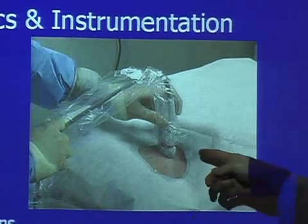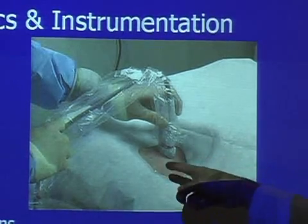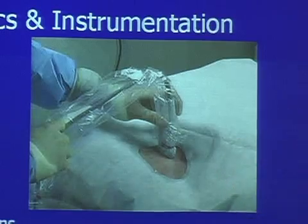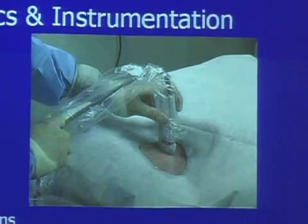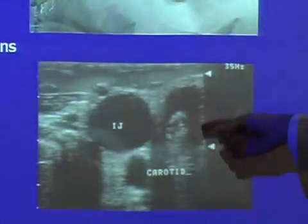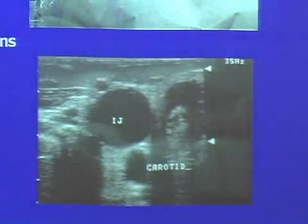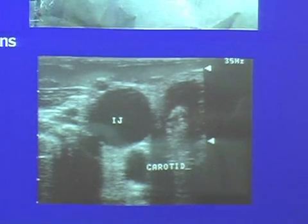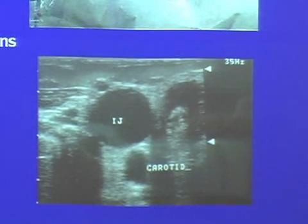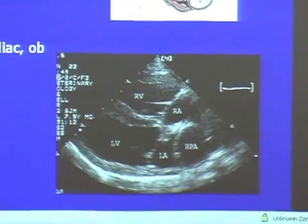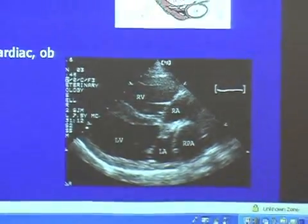Here's a nice view of a linear probe — long skinny probe with a large footprint — showing the neck, presumably for a central line placement, with the IJ right here. That's the one you'll commonly see used in the emergency room for those applications, or in the ICU.